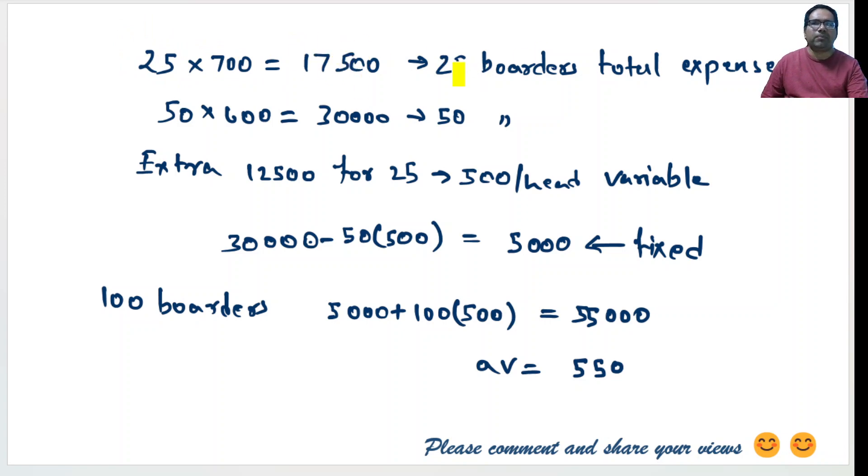Similarly when 50 people are there, average is 600, that means total expense is 30,000. 50 into 600.